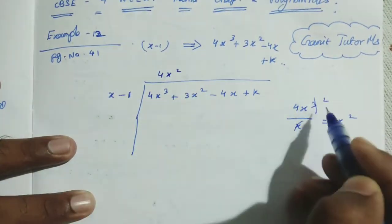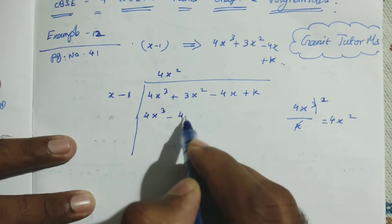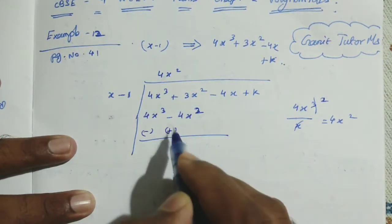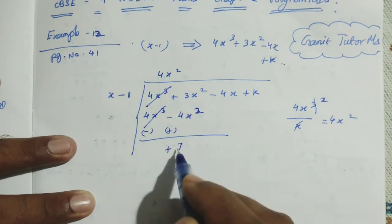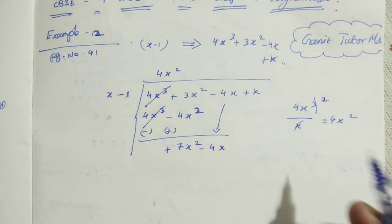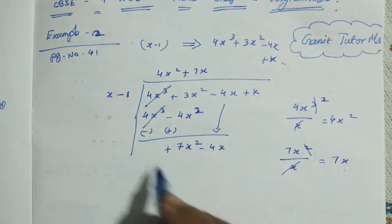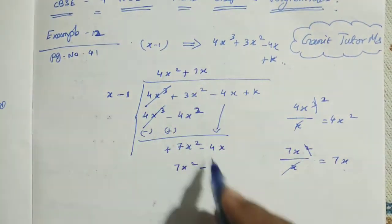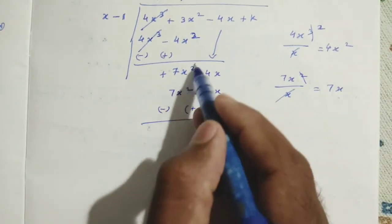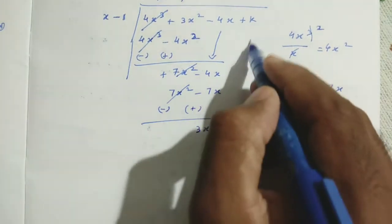So we write 4x squared. Then 4x squared times x minus 1 gives 4x cubed minus 4x squared. Changing sign: minus 4x cubed cancels, and plus gives 7x squared. Bring down minus 4x. First term: 7x squared divided by x gives 7x. So plus 7x times x minus 1 gives 7x squared minus 7x. Changing sign: minus then plus. 7x squared cancels, so we get 3x. Bring down plus k.